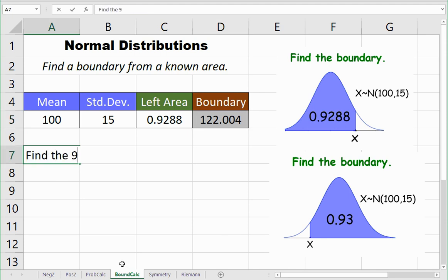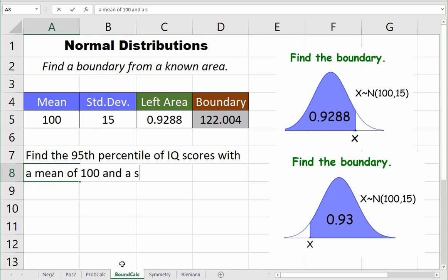Now what about a question like this? Find the 95th percentile of IQ scores with a mean of 100 and a standard deviation of 15. So far we have the mean of 100, standard deviation of 15.